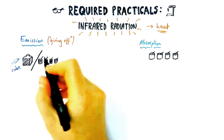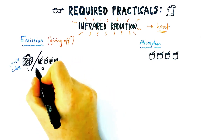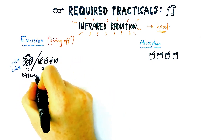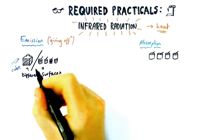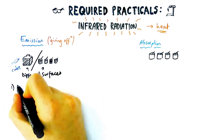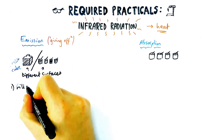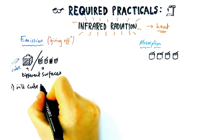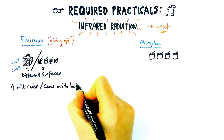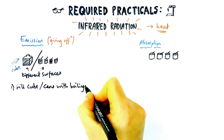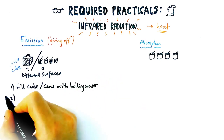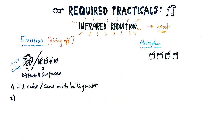Or you can do it with four or more separate containers with different surfaces that all hold water. The first job is to get hot water from a kettle and fill up the cube or the cans with the boiling water. If it's the cans, they have to have the same volume.